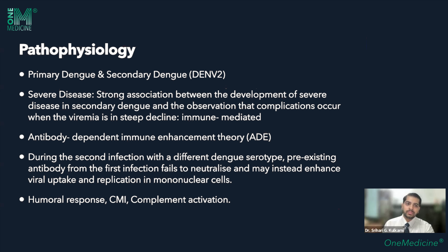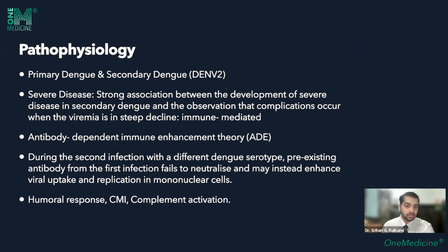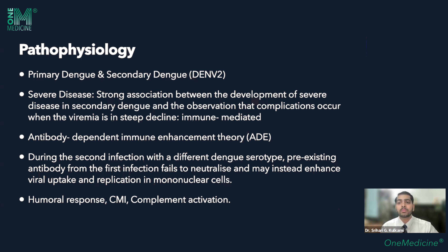Let's understand some important pathophysiology concepts that help in treatment decisions. We have primary dengue — the first time a person is infected — and secondary dengue, the second infection, which is the most serious. The most severe dengue infections occur when a primary infection with serotype DNV1 is followed by a secondary infection with dengue virus 2. Complications occur when viremia is in decline, meaning the virus load is actually low when complications arise.